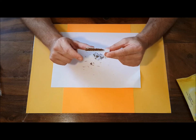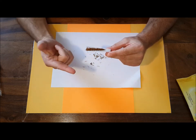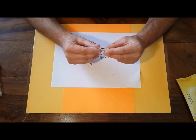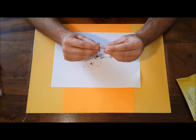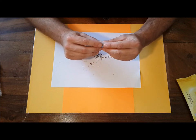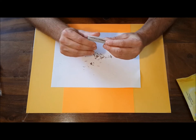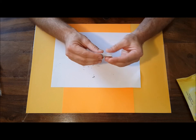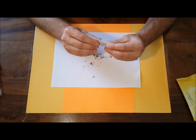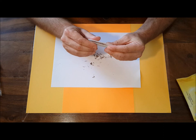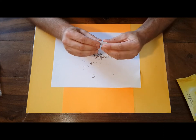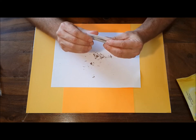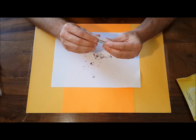And start pushing very gently the tobacco from this side to this side, this side to this side, and start rolling. You can feel with your finger here if your line is still equal.